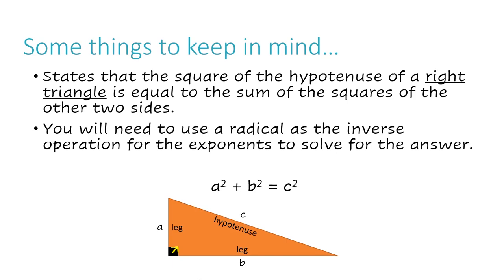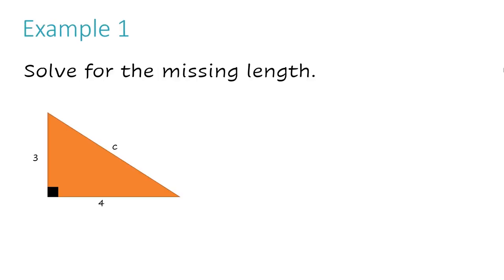The hypotenuse is always the longest side of a right triangle. Let's take a look at example number one. I have a right triangle that has a leg of 3, a leg of 4, and the hypotenuse length is unknown, so it's represented as C. I'm going to start off by writing my formula: a² + b² = c².